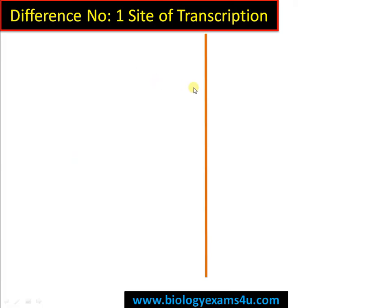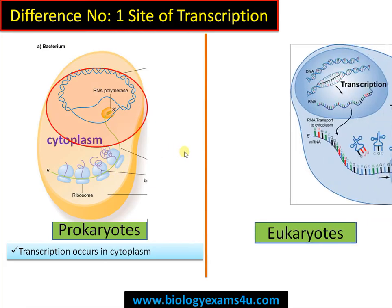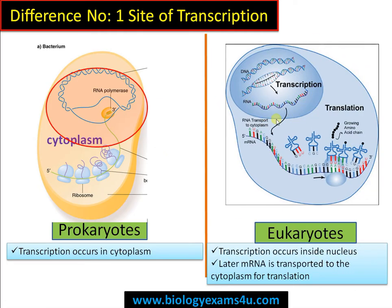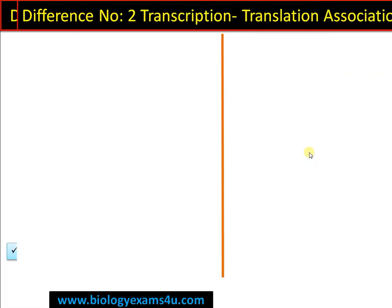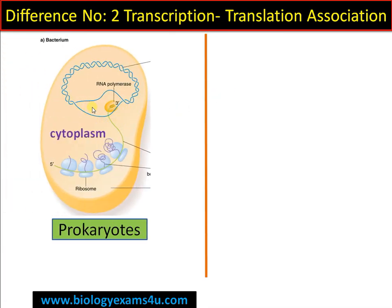Difference number one is regarding the site of transcription. In prokaryotes, there is no true nucleus and no compartmentalization, so transcription occurs in the cytoplasm. In eukaryotes, transcription occurs in the nucleus — RNA formation happens in the nucleus, and the processed RNA is later transported into the cytoplasm for translation.